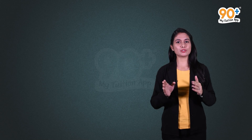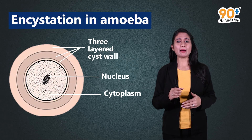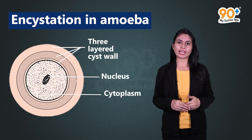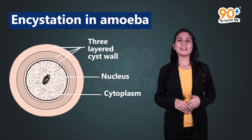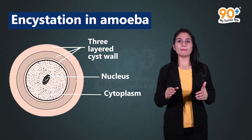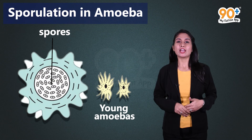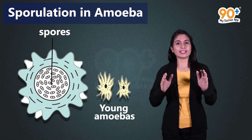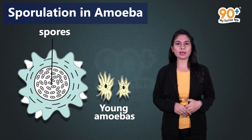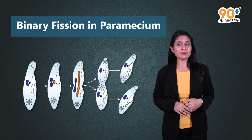Under unfavorable conditions, the amoeba chooses two different paths. The first is encystation, where amoeba withdraws its pseudopodia and secretes a three-layered hard covering or cyst around itself; later, when conditions improve, the amoeba comes out of the cyst. The second is sporulation, where the cyst wall bursts and spores are exposed to the surrounding medium, growing into many amoebas. Paramecium also undergoes asexual reproduction to form daughter cells.